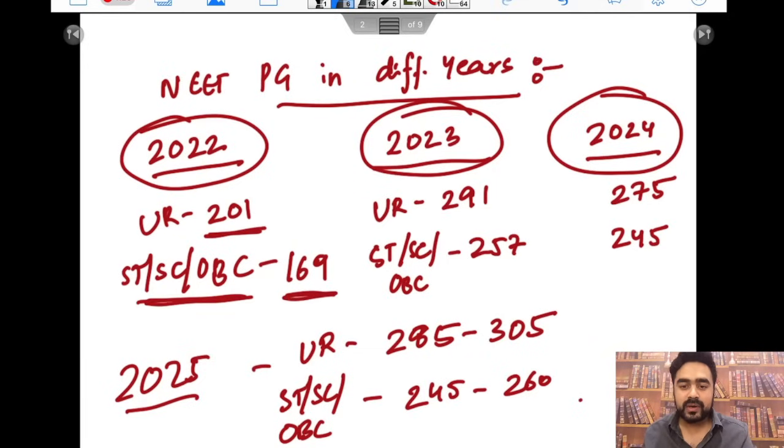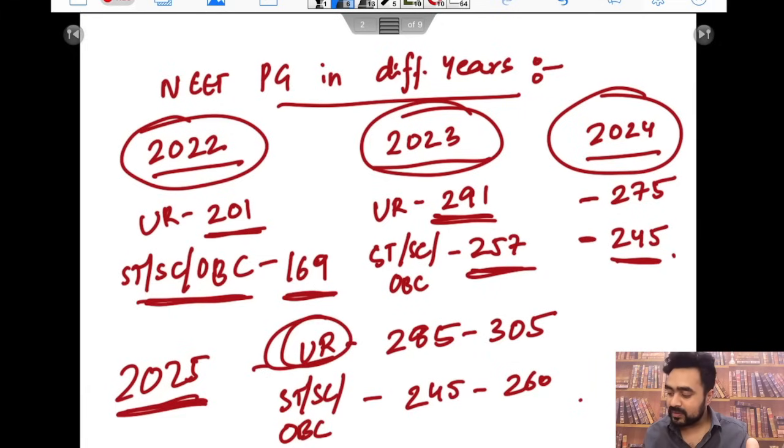In 2023 it was 291 for Unreserved, and for ST/SC and OBC it was 257. Now for Unreserved in 2024 it was 275 and 245. The difference between 2023, 24, and 25 is in 2025 it was a single shift exam.